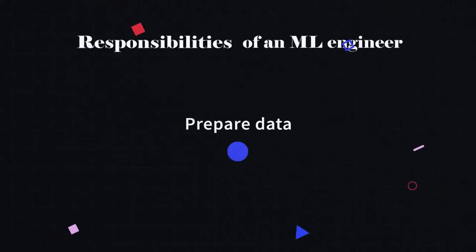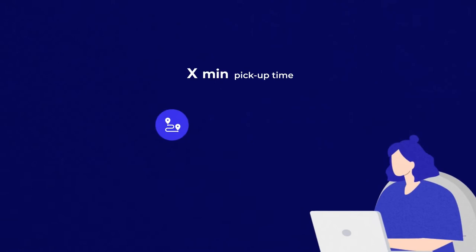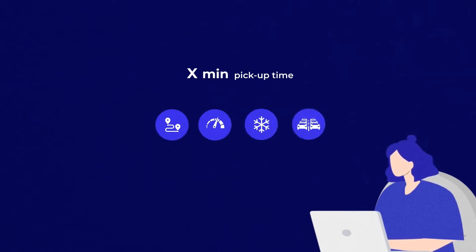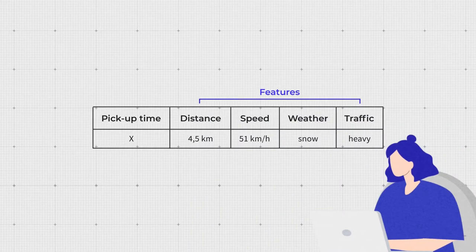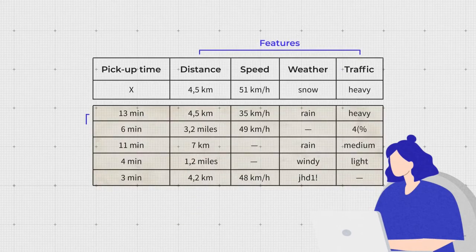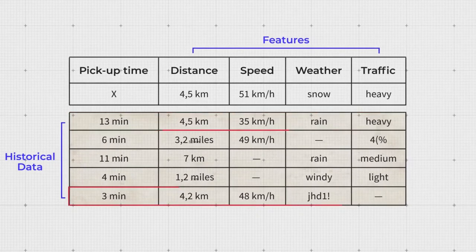An ML engineer will start with choosing and preparing data. Let's assume there are several variables we need to calculate pickup time: the distance from the customer to the driver, speed, weather, and traffic congestion, to name a few. All of these can become features — data attributes a model uses to give us prediction results. To get this data, an ML engineer will have to analyze historical records on previous pickups that contain those variables. Choosing the right data and consolidating it is the first step.